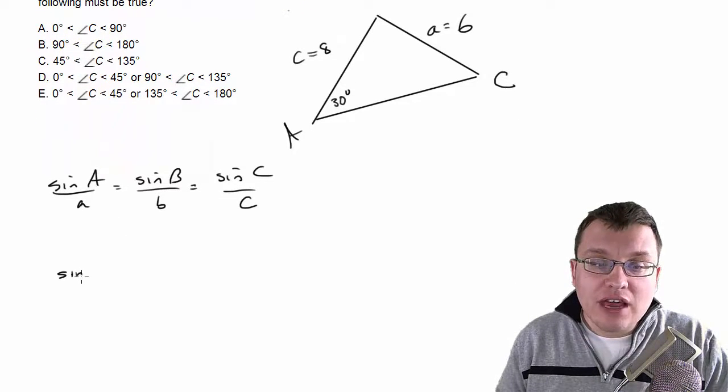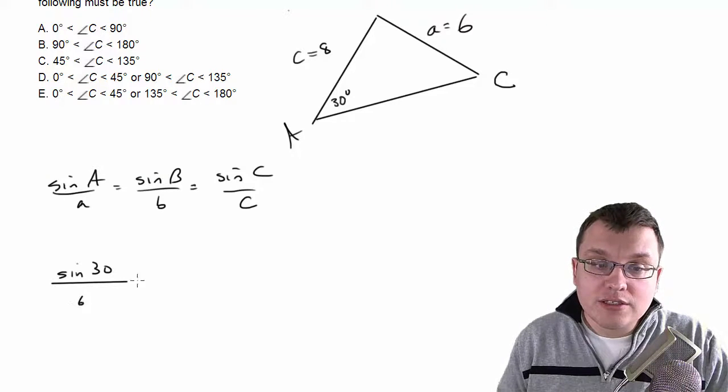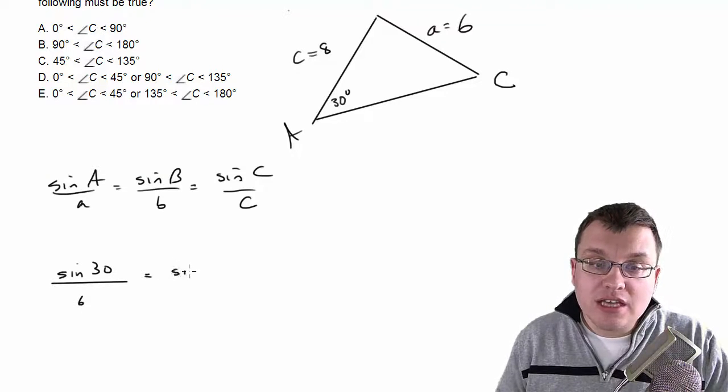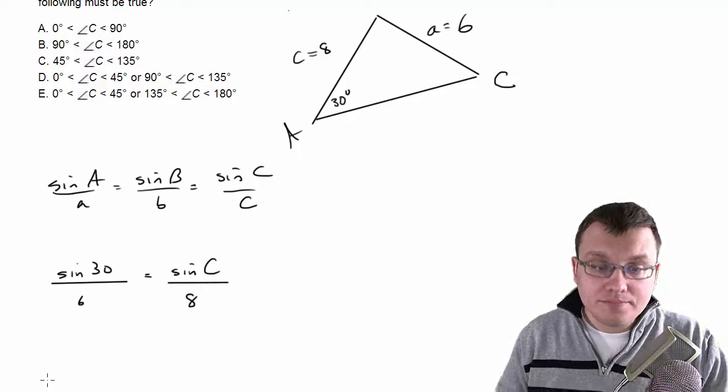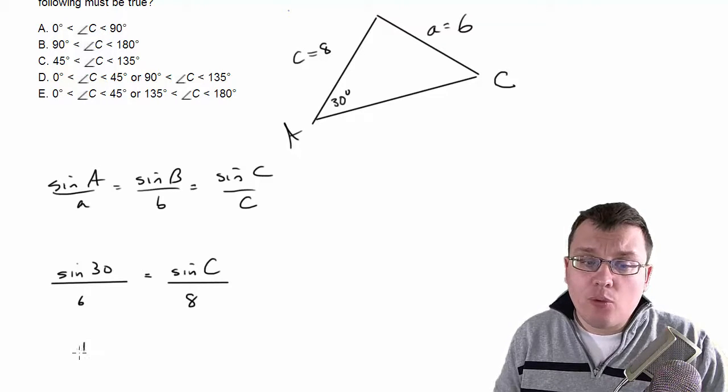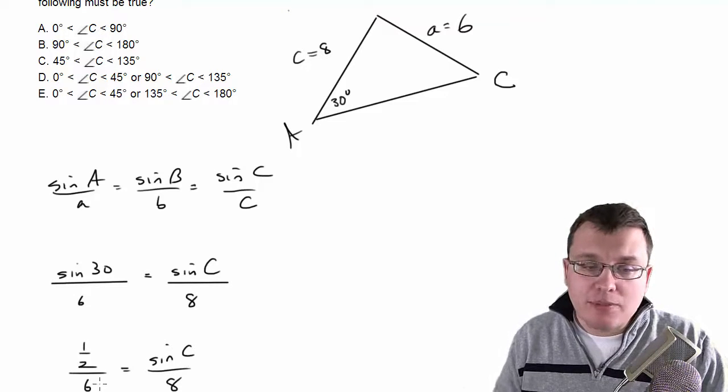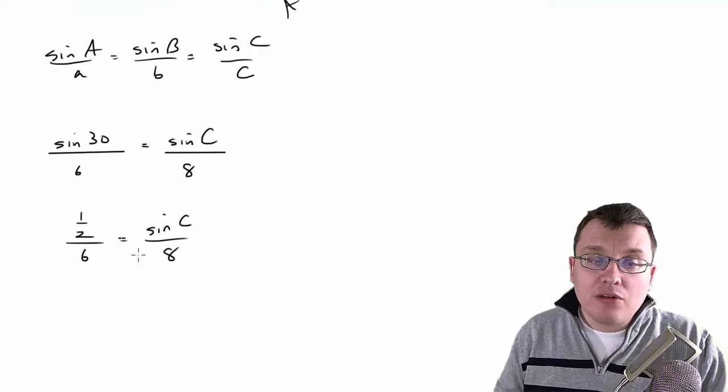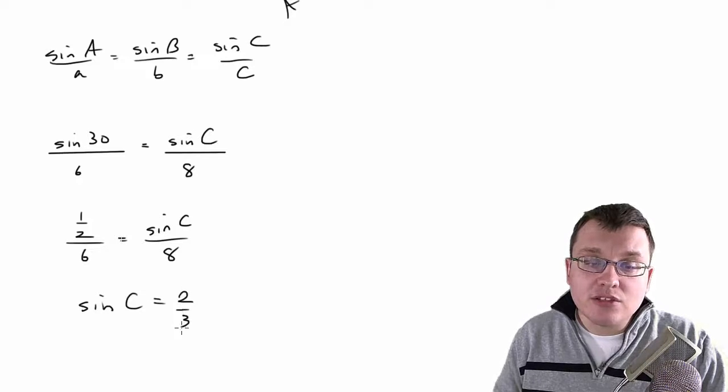So sine of A is going to be sine of 30 over 6 equals sine of C, which is what we're looking for, over 8. So with that, we know this is a half. So one half over 6. And you can put that in your calculator if you didn't know that, but I just happen to know it. So we get that. We do a little cross multiplying. We do a little reducing. We get sine of C equals 2/3.